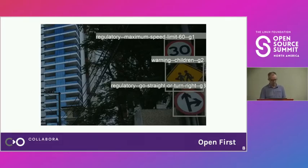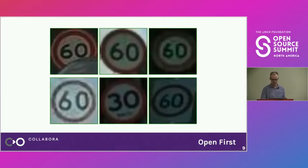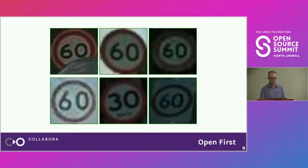This image has all the information you need to find the error, but it's still pretty hard. Our key insight is to bring similar things together — it makes errors much easier to spot. Now it's pretty easy to see that among these 60 speed limit signs, there's one that says 30.